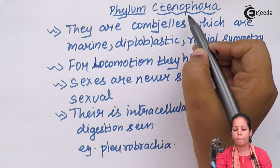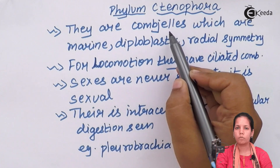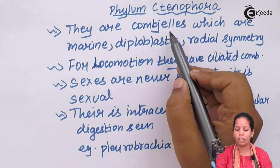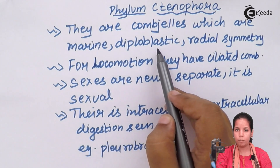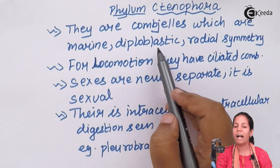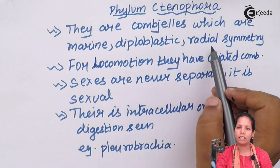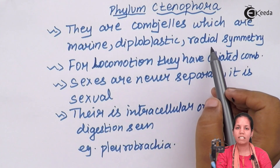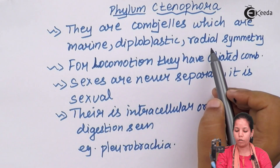Phylum Ctenophora basically has comb jelly organisms or jelly-like structured organisms. They are marine and diploblastic in nature — meaning they have only two germ layers, whereas organisms with all three germ layers are triploblastic. They have radial symmetry, which means their division starts from the center axis.